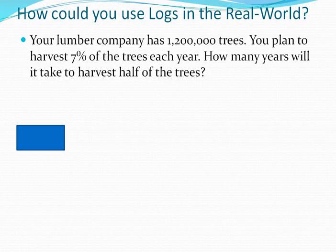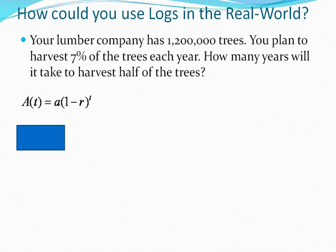All right, so the first thing we got to look at is we need to have our decay formula there. So A of t equals a times 1 minus r to the t.